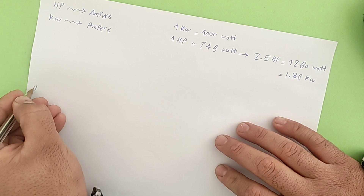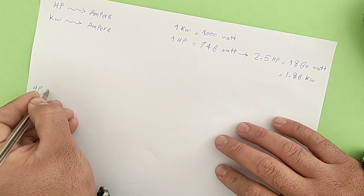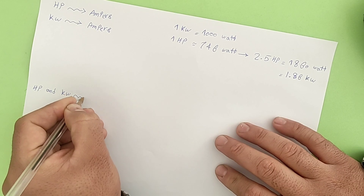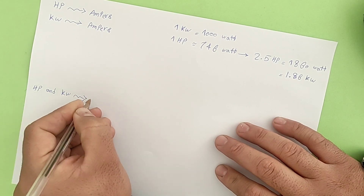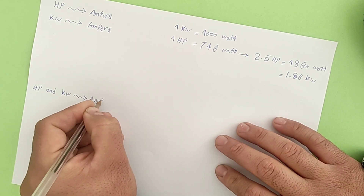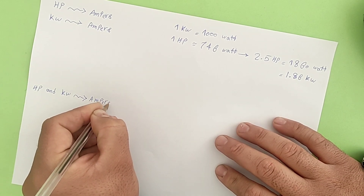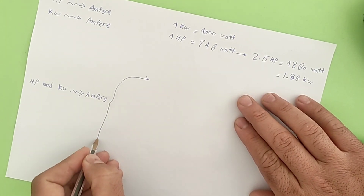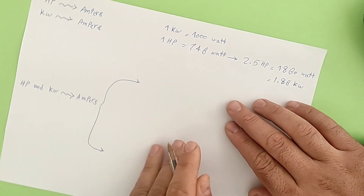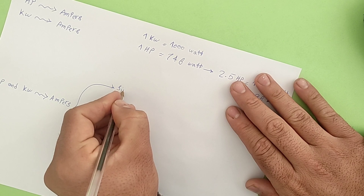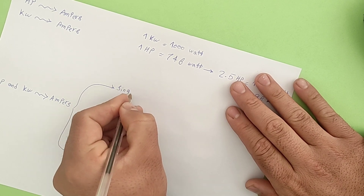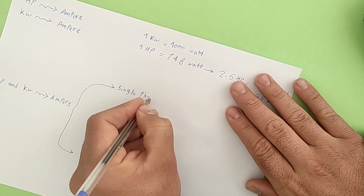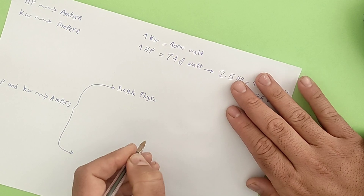Now we want to know how to get the current of the consumer from its power. The working method is different for three-phase and single-phase consumers. First we will check the current calculation method in single-phase consumers.